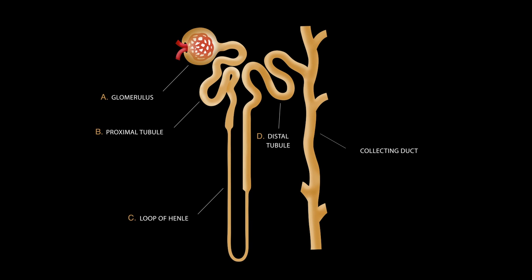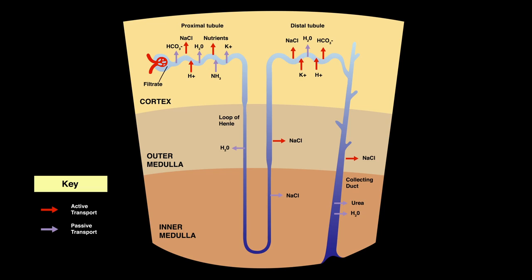Those five choices are A, B, C, D, and E. To answer this Biology 124 question, it's really imperative that you understood all the different types of molecules moving in and out of all the different parts of the nephron.